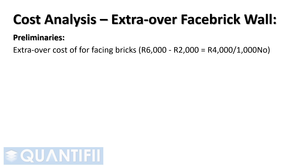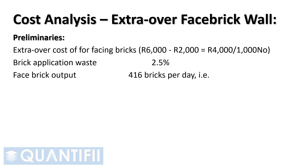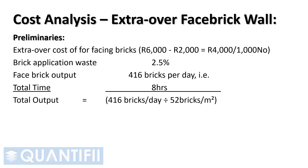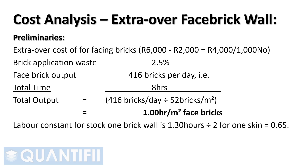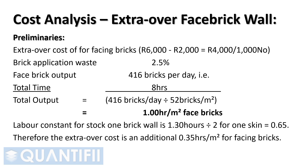Brick application waste on face bricks is 2.5%. Face brick output is 416 bricks per day — that is, total time 8 hours divided by total output: 416 bricks per day divided by 52 bricks per square meter — which equals 1 hour per square meter, less the labor constant for stock bricks. As we are deducting only one skin from the stock brick wall, we deduct half the labor constant — that is, 1.3 hours divided by 2 for one skin equals 0.65 hours per square meter. Therefore the extra over cost is an additional 0.35 hours per square meter for facing bricks.